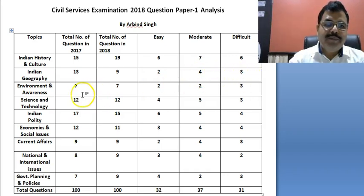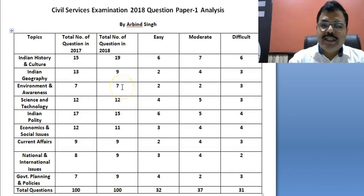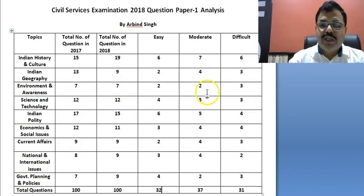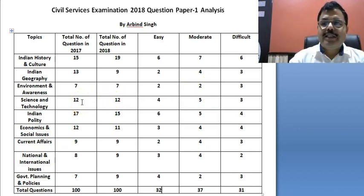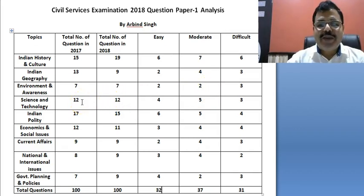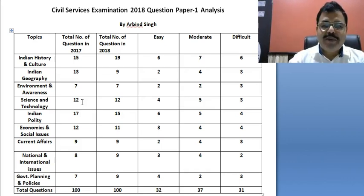In Geography, the easy, moderate, and difficult questions are categorized as two, four, and three respectively. In Economics, Environment and Awareness, seven questions were asked last year and again seven questions this year — two easy, two difficult, and three moderate. In Science and Technology, similarly 12 questions were asked this year — four easy, five moderate, and three difficult.